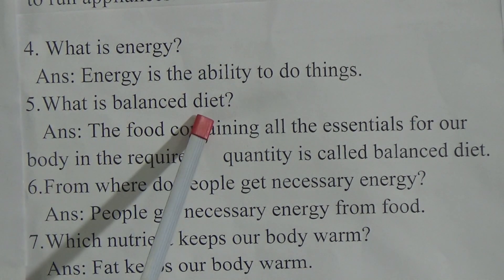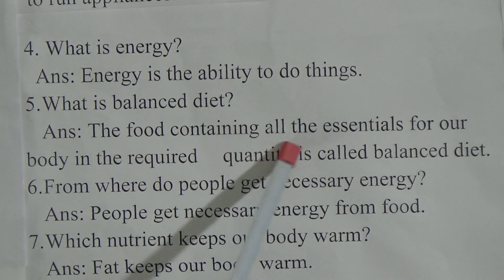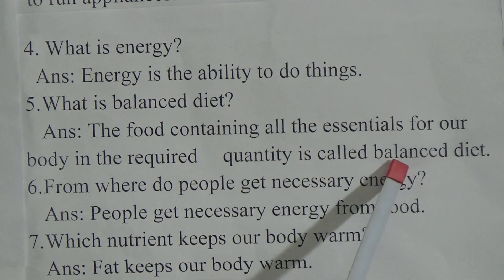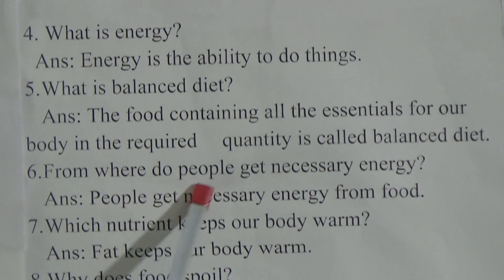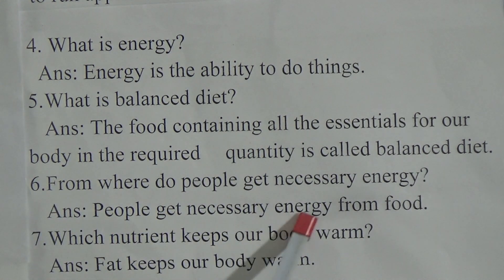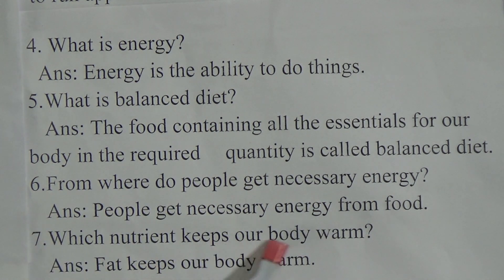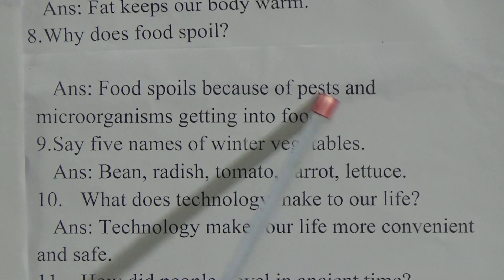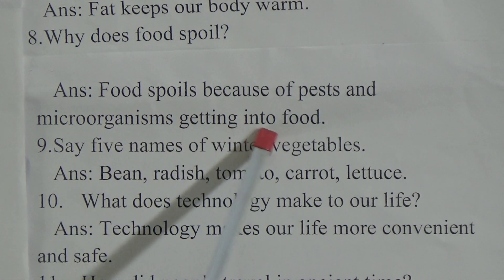Question 5: What is a balanced diet? Answer: The food containing all the essentials for our body in the required quantity is called a balanced diet. Question 6: From where do people get necessary energy? Answer: People get necessary energy from food. Question 7: Which nutrient keeps our body warm? Answer: Fat keeps our body warm. Question 8: Why does food spoil? Answer: Food spoils because of pests and microorganisms getting into food.